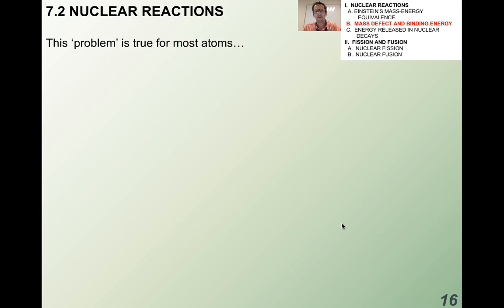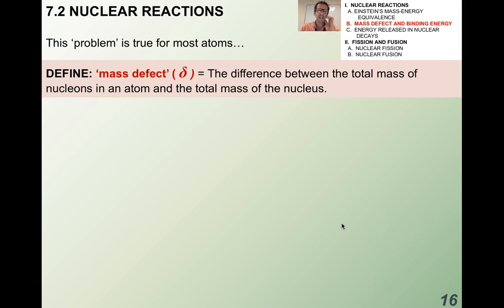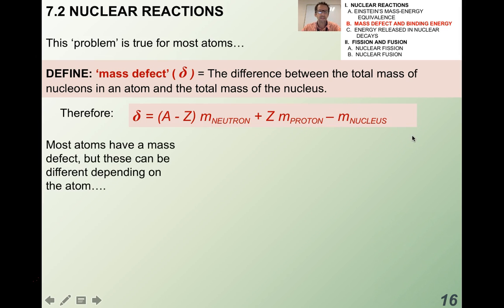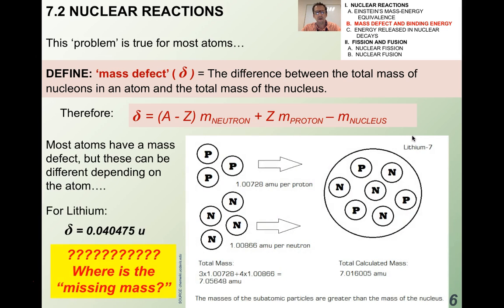If you do these calculations with any atom, you'll find there's always a difference depending on the method. Einstein came up with what he called the mass defect, symbolized by the Greek letter delta. It's the difference between the total mass of nucleons in an atom and the total mass of the nucleus. Mathematically, the mass defect equals (A minus Z) times the mass of a neutron, plus Z times the mass of a proton, minus the mass of the nucleus. For lithium-7, for example, the mass defect is 0.040475 atomic mass units.